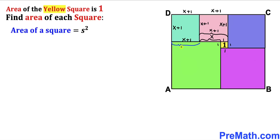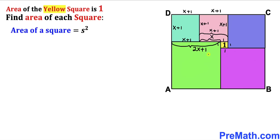Now let's focus on this green square. We know that this side length is x plus 1 and this other side length is x. So this whole side length is going to be (x plus 1) plus x, which gives us 2x plus 1. Therefore each side of the green square is 2x plus 1.